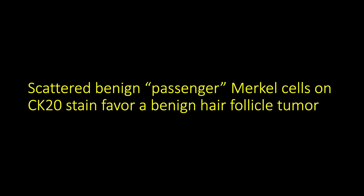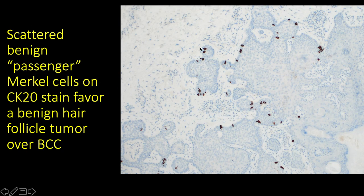One helpful clue is passenger Merkel cells — you can use a CK20 stain, which will show scattered individual cells with the whole cytoplasm staining, scattered throughout the benign hair follicle tumor. I think this was actually a trichofolliculoma, but you can see this in a variety of benign hair follicle tumors. I find scattered CK20-positive passenger Merkel cells within a basaloid tumor to be a helpful finding supporting a benign diagnosis over basal cell carcinoma.